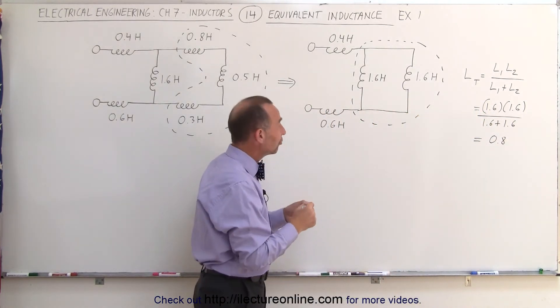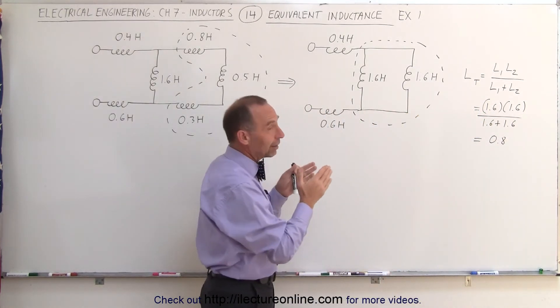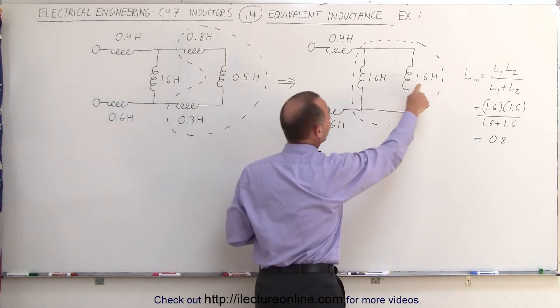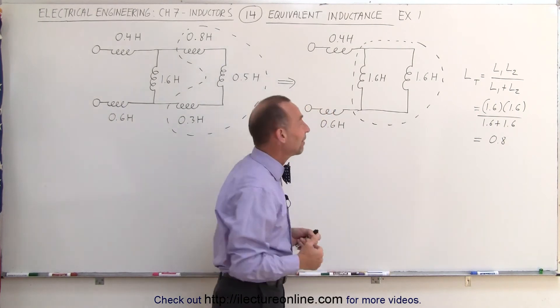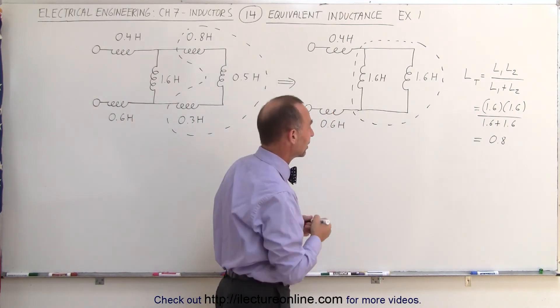Now, it turns out when you have two inductors that are in parallel, just like with two resistors in parallel, and their values are the same, then the equivalent inductance will simply be half the value of one of them. As you can see, the result is right here.